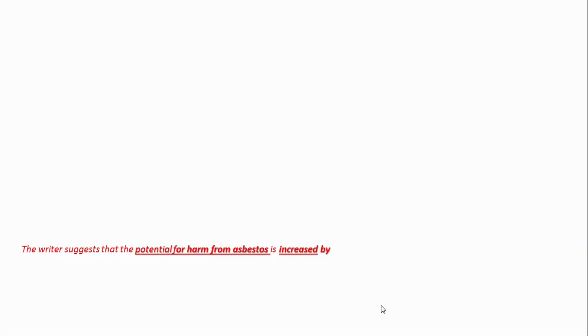If you read the question first, you will understand that the question is specifically asking what increases the potential for harm from asbestosis. Potential for harm means increased. So now if you read the paragraph before reading the options, we have to read the paragraphs to find out what makes asbestosis more harmful — that is the question here.